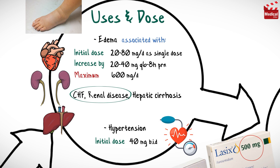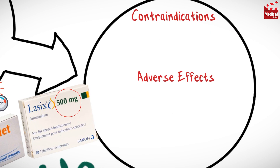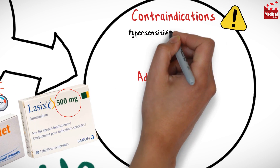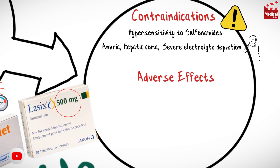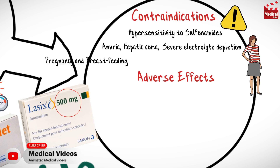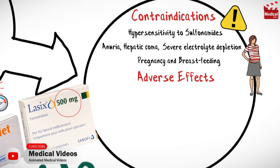For congestive heart failure and chronic renal failure, the usual dose for adults is 2 to 2.5 grams per day. It is contraindicated in cases of hypersensitivity to sulfonamides, anuria, hepatic coma, severe electrolyte depletion, and also in cases of pregnancy and breastfeeding.